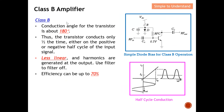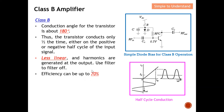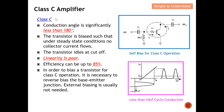For class B, the conduction angle for the transistor is about 180 degrees, meaning it conducts for half the cycle — either the positive or negative half cycle of the input signal. Class B amplifiers are less linear and harmonics are generated at the output, so we need a filter to remove those harmonics. However, the efficiency can be as high as 70 percent, which is better than class A.